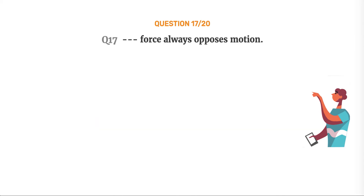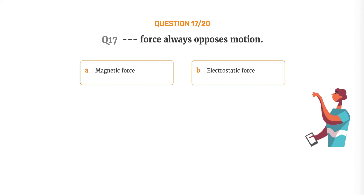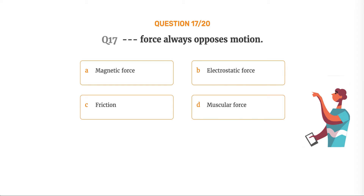Question number 17. Which force always opposes motion? Option A: Magnetic force. Option B: Electrostatic force. Option C: Friction. Option D: Muscular force.